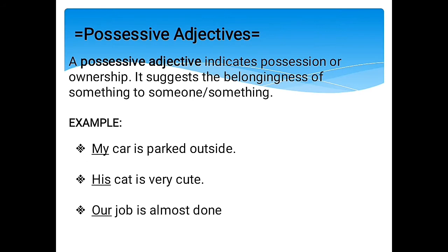The next type is possessive adjectives. A possessive adjective indicates possession or ownership — it suggests the belongingness of something to someone. Examples of possessive adjectives are: my, his, her, our, their, your. For example, 'My car is parked outside' — my is our possessive adjective indicating ownership. 'His cat is very cute and our job is almost done.' All possessive adjectives come before a noun.